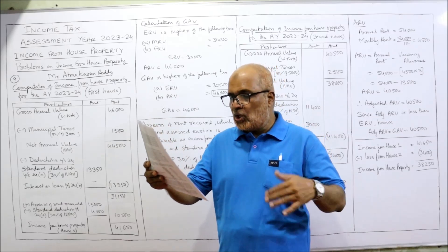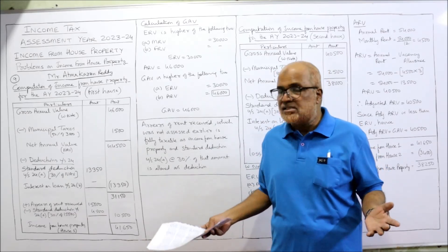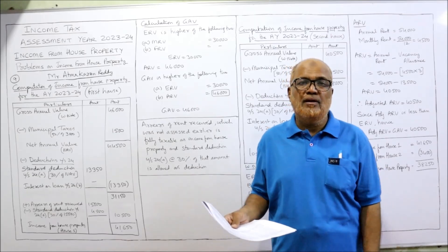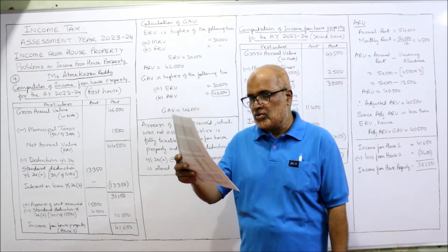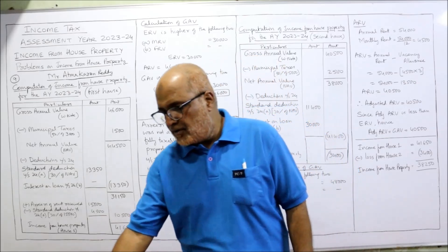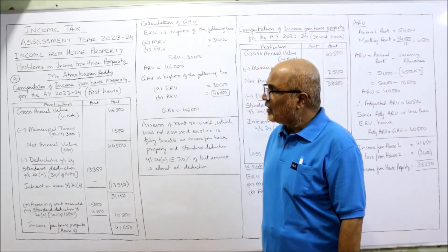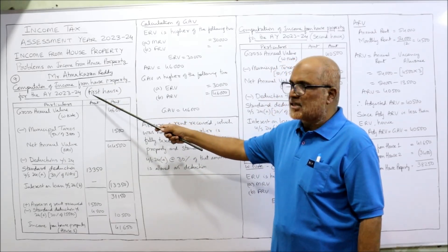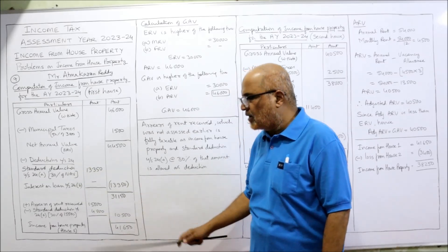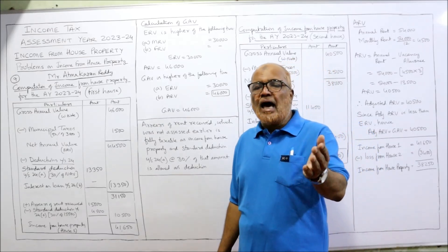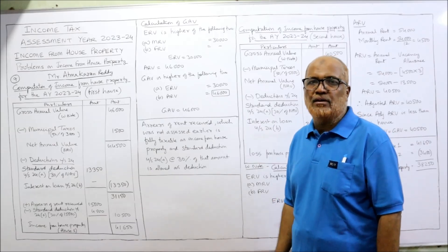Arrears of rent received from the first house amount to 15,000, which was not assessed to tax earlier. It is taxable in the current year in computing the income from the first house. The second house was vacant for three months, so there is a vacancy allowance for the second house. The house is not governed by the Rent Control Act because standard rent is not given, so adjusted ERV is not required. We now begin the computation of income from house property for assessment year 23-24, starting with the Gross Annual Value (GAV).